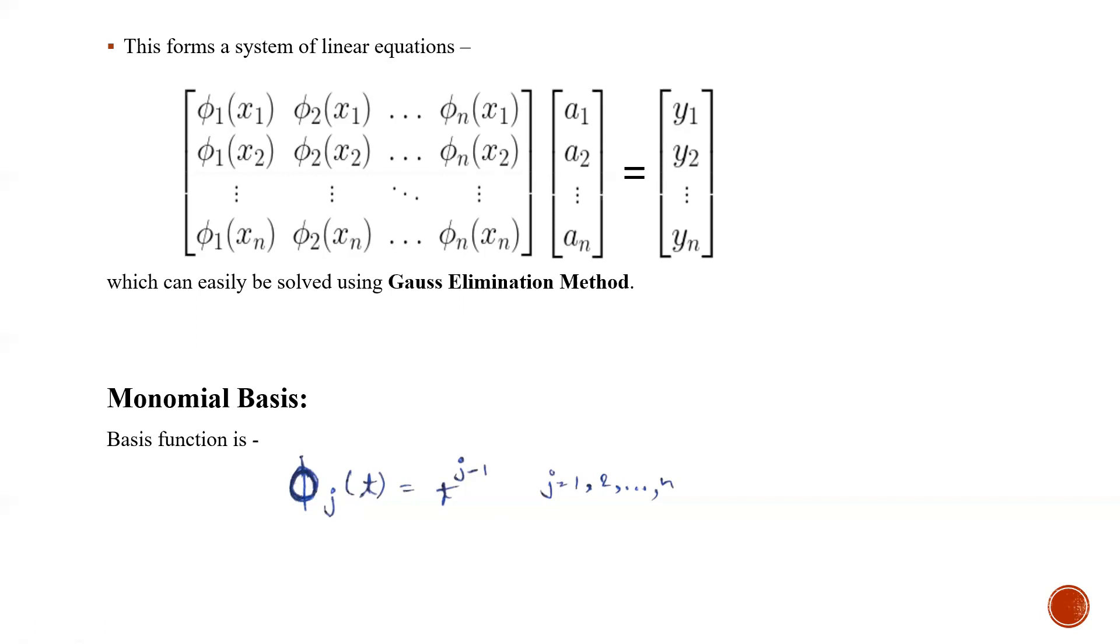Now the mostly used basis are firstly the monomial basis. This is the most commonly used basis to interpolate function polynomials. The basis function for this is simply t to the power j minus 1 where j goes from 1 to n.